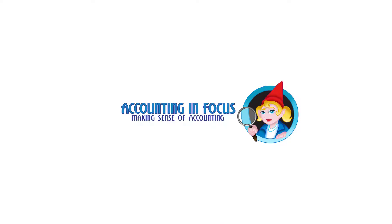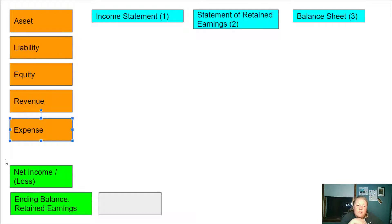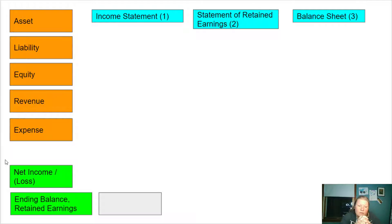Welcome to Accounting in Focus. In this video I want to explain how the five types of accounts become your financial statements and how the three statements are linked together. Remember the five types of accounts are assets, liability, equity, revenue, and expense.